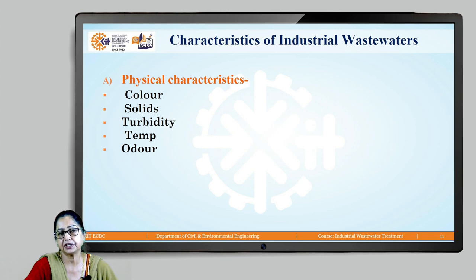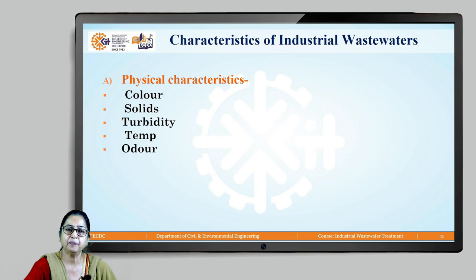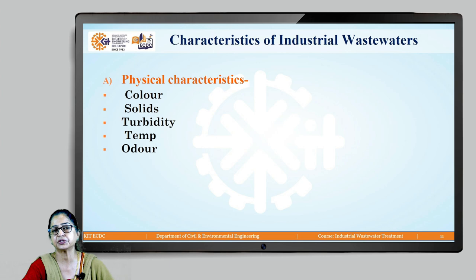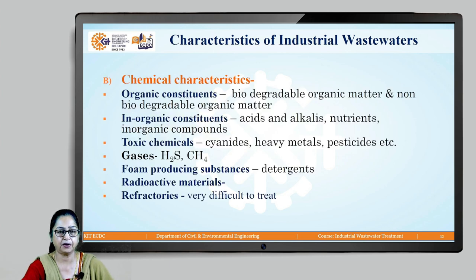The physical characteristics of industrial wastewater include colour, which varies from industry to industry, and solids — many industrial wastewaters have very high suspended solids and dissolved solids. Temperature is normally high, and some industries, especially chemical industries, produce wastewater with quite strong odour.